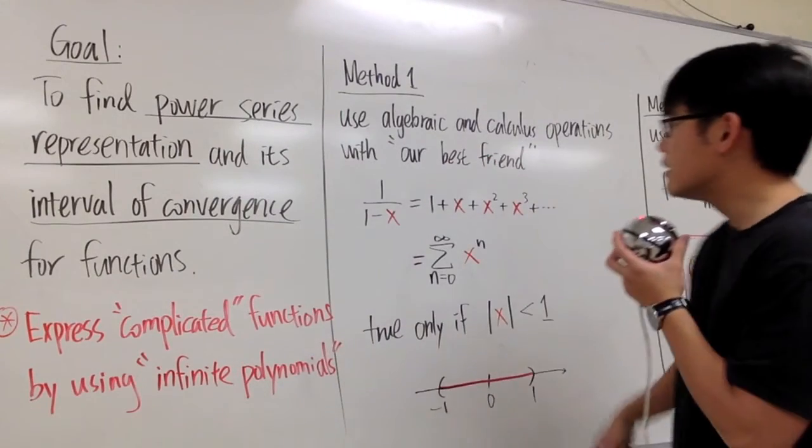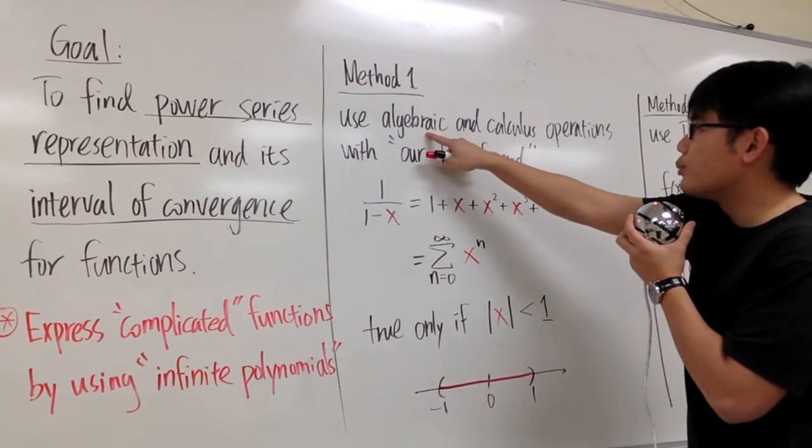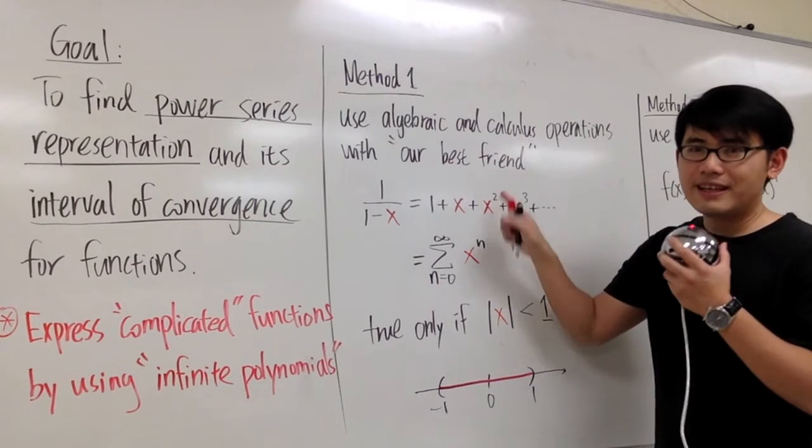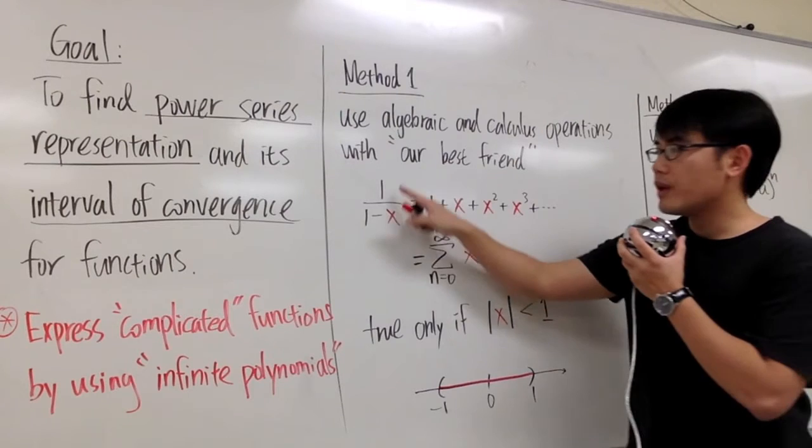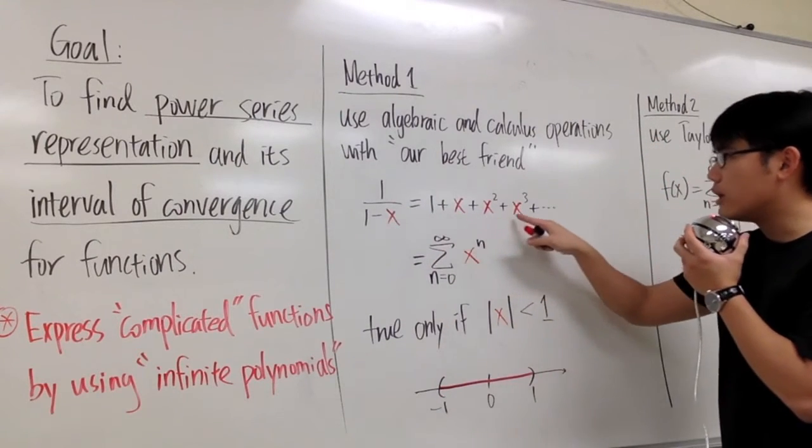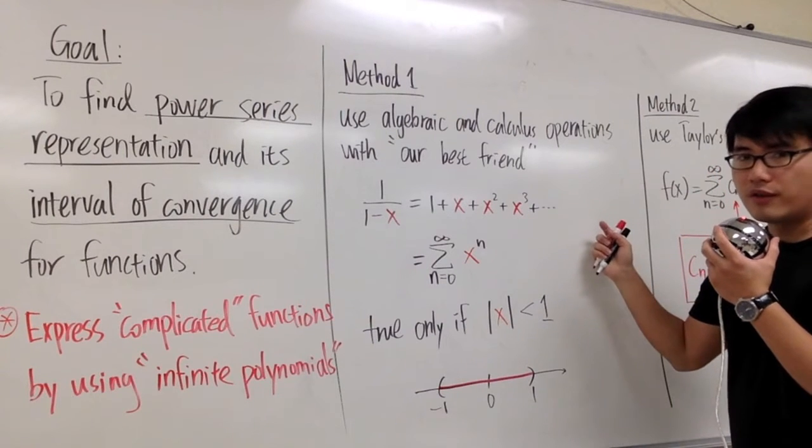The first method is that we can use algebraic or calculus operations along with our best friend, and this right here is our best friend. 1 over 1 minus x can be written as 1 plus x plus x squared plus x to the third power and so on forever.